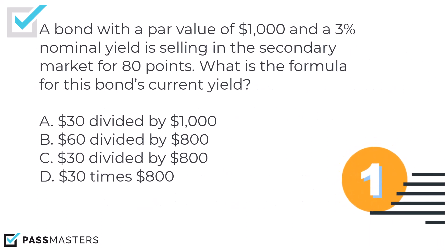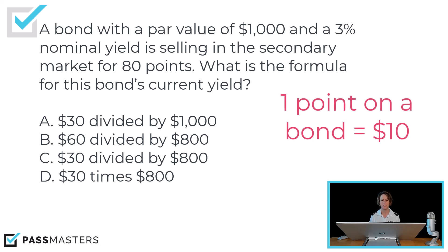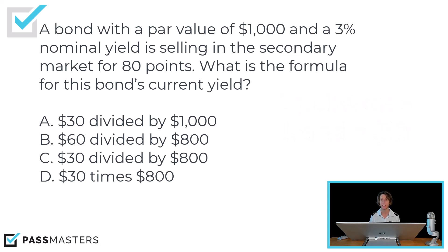Let's look at some example questions together. A bond with a par value of $1,000 and a 3% nominal yield is selling in the secondary market for 80 points. What is the formula for this bond's current yield? The question expects you to understand that one point on a bond is worth $10, so the current market price of this bond is not $80 but instead $800. And how do you know how much the annual interest is? It says in the question: 3% nominal yield.